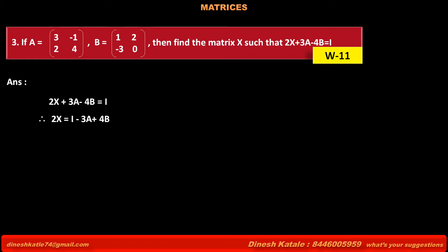This equals the identity matrix [1, 0; 0, 1] minus 3 times matrix A [3, -1; 2, 4] plus 4 times matrix B [1, 5; -3, 0].